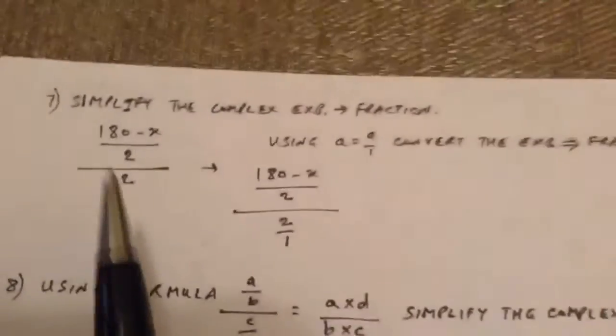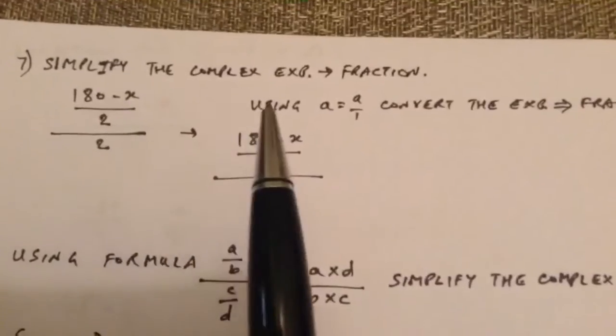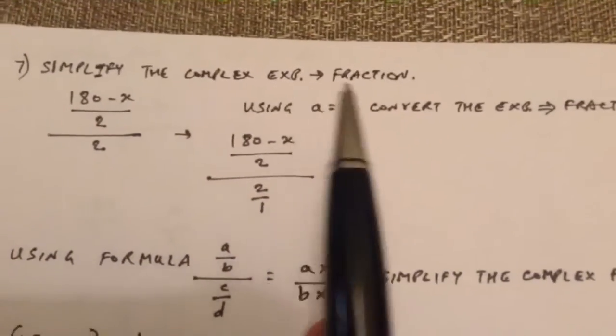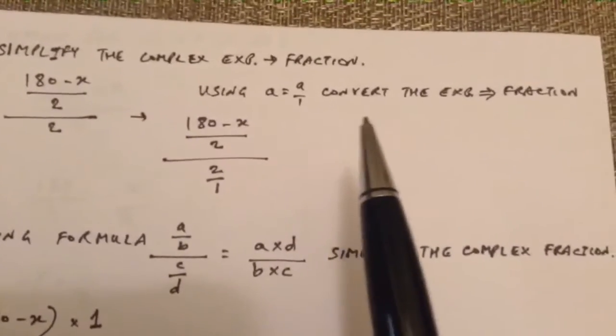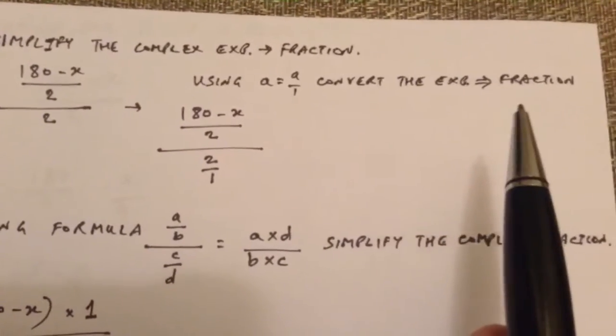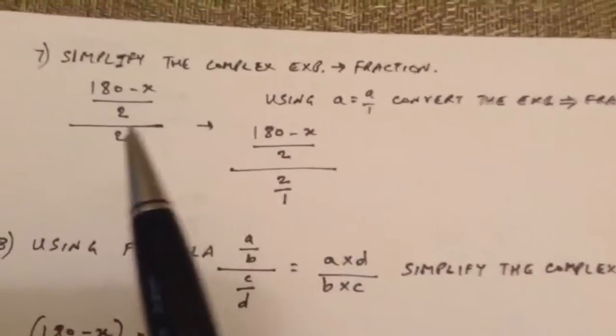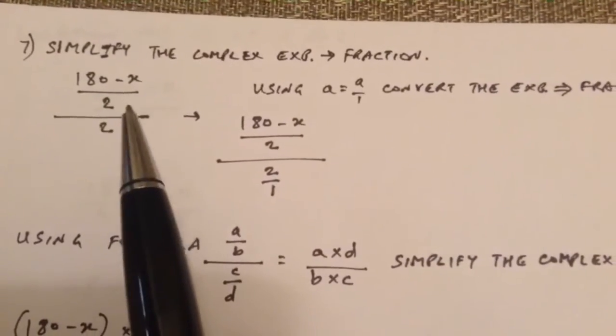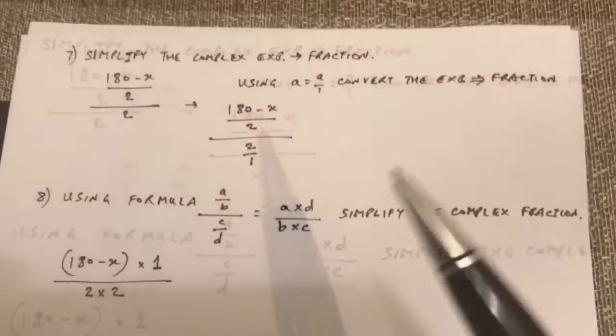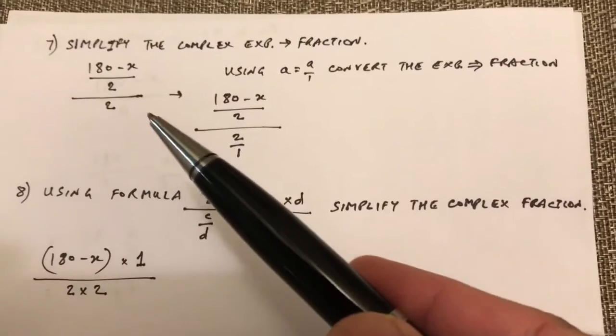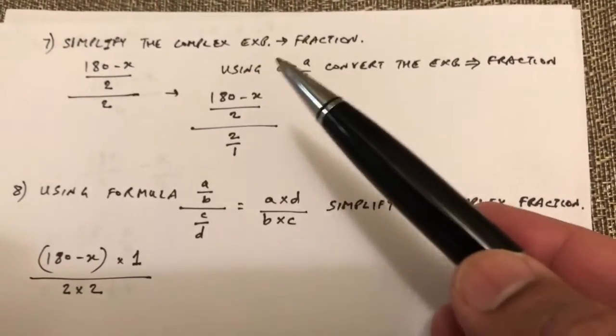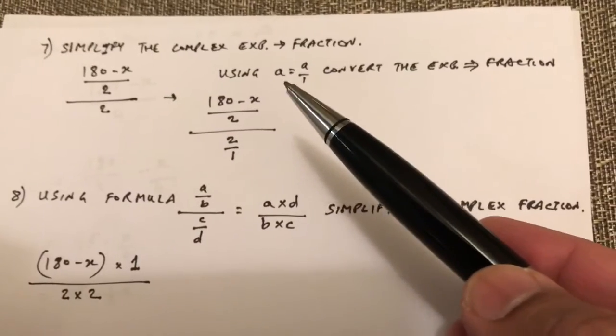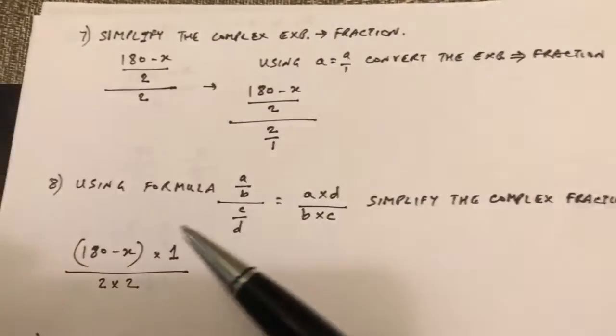So what we do further down here is simplify the complex expression or complex fraction. So again, we are using A equals A over 1 to convert the expression into a fraction. What we have here is 180 minus x over 2 divided by 2. So over here, we wrote this 2 as 2 over 1, using the understanding or formula, mathematical formula A equals A over 1.